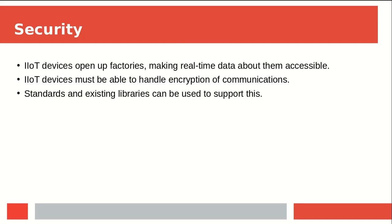The last point I wanted to mention is security. IIoT devices do effectively open factories up to the outside world and make a lot of real-time data about them accessible, because the intention is to transmit up to the cloud, which obviously isn't on site. MQTT does allow for encrypted communication already, as do the web standards that support it, so it's something to keep in mind when you're looking at buying devices more than anything else.